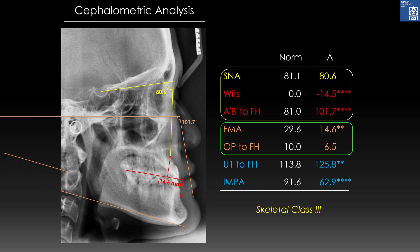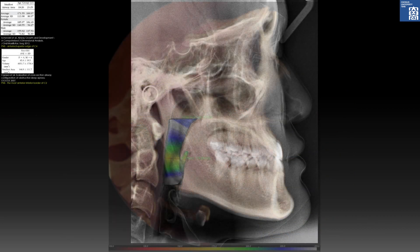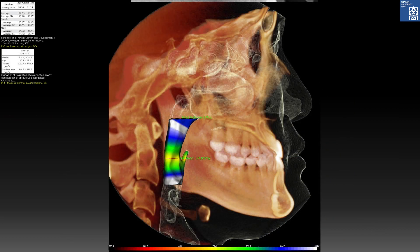Frankfurt mandibular plane angle was only 14.6 degrees, and occlusal plane angle was flat with only 6.5 degrees, indicating a hypodivergent pattern. Maxillary incisors were proclined and mandibular incisors were retroclined, indicating anteroposterior dental alveolar compensation to this skeletal Class 3. AOB was within normal range.